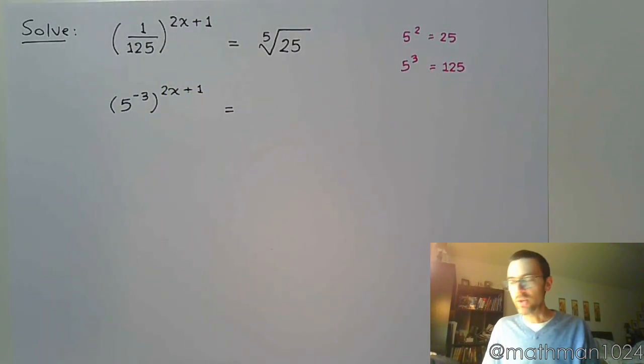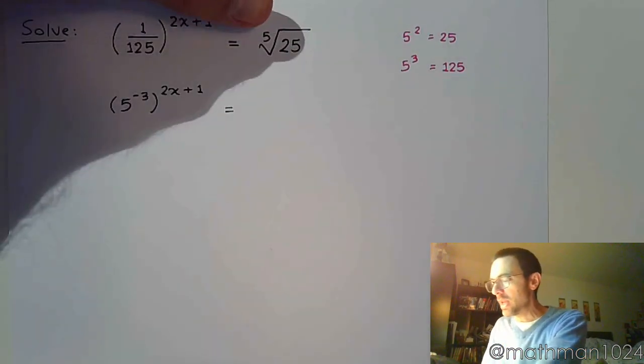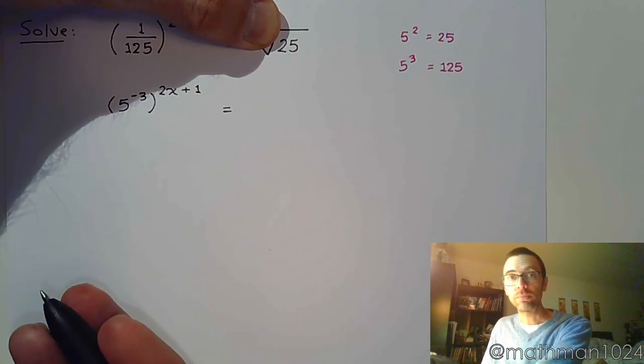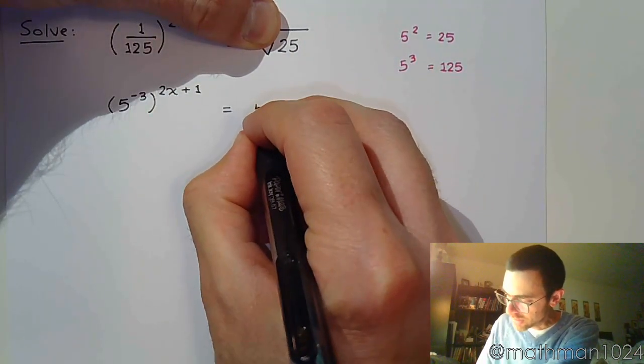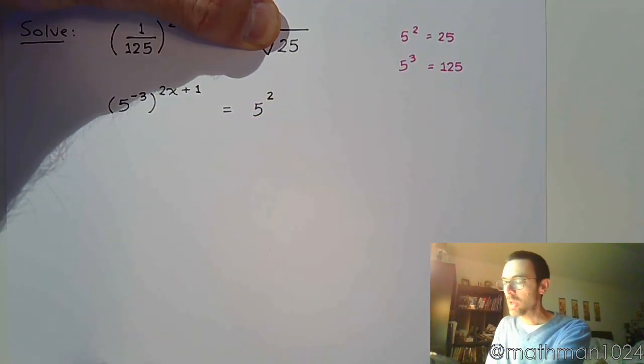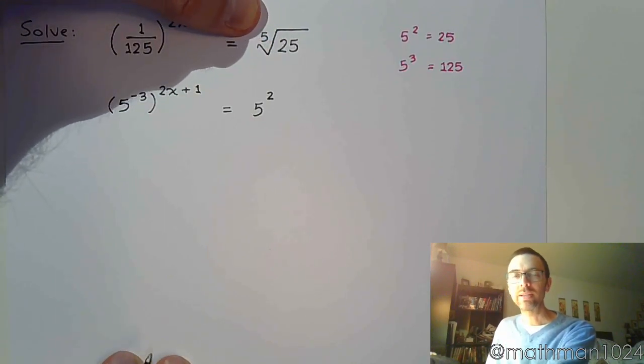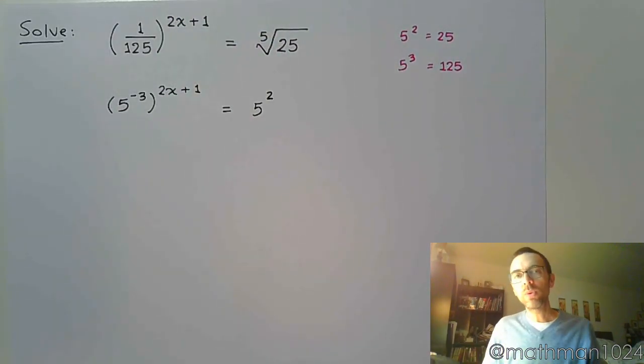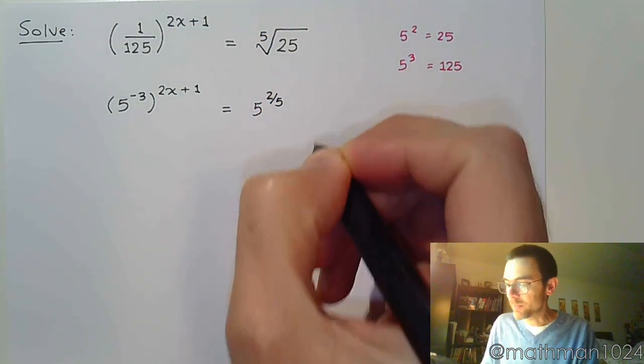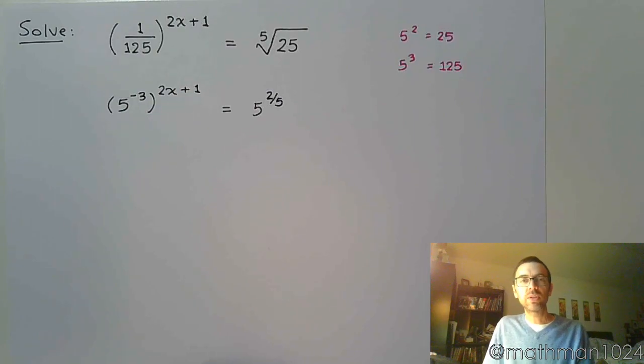On the right side of the equation, just ignore the fact that there is a radical. If I just have 25, how do you rewrite 25 as a power? Well, 25 is 5 to the second power, right? That's it. So how do I incorporate that index? Well, if you think about what we said in a previous video about how the index relates to the power, you'll remember that the index becomes the denominator of the power, so it's 5 to the 2 fifths power.